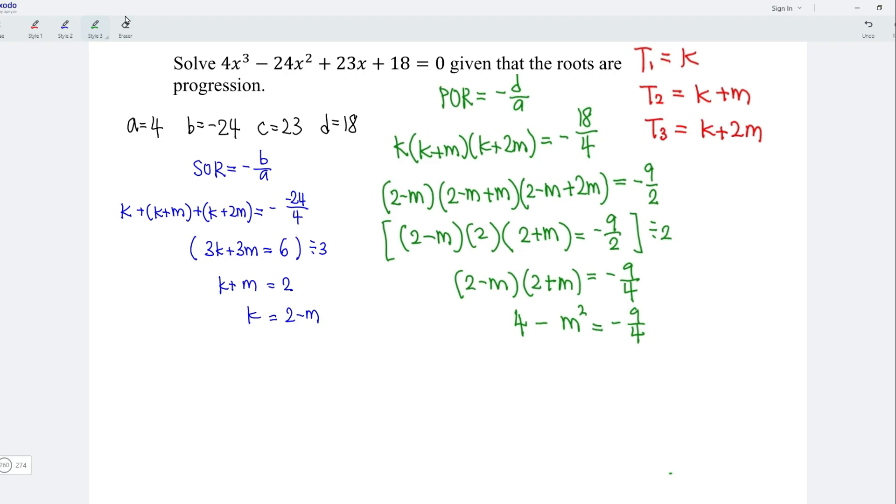Let's rearrange the equation. Negative M squared move to the right. Negative becomes positive, which means that we have positive M squared. 4 remain on the left. Then bring negative 9 over 4 to the left. Negative becomes positive, which means that we have M squared is equal to 25 over 4.